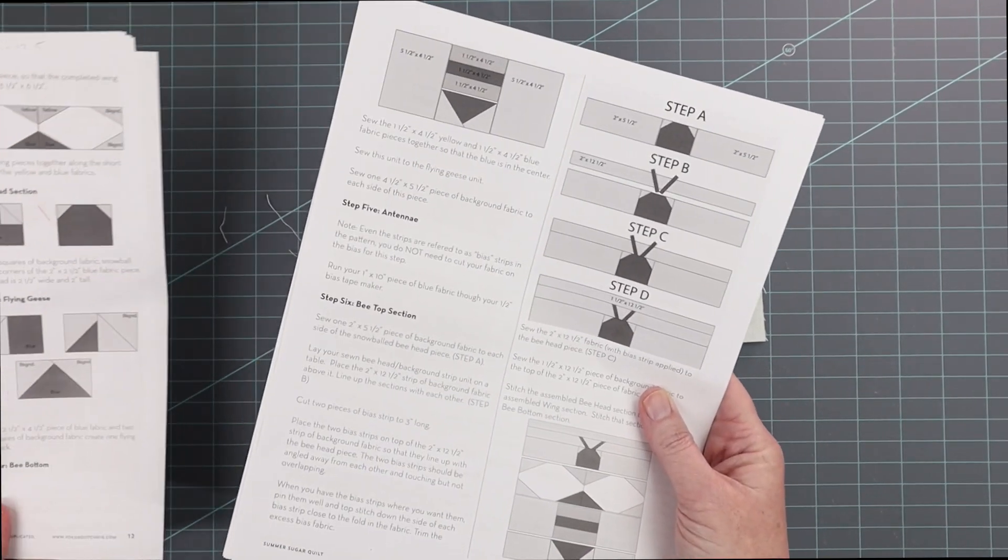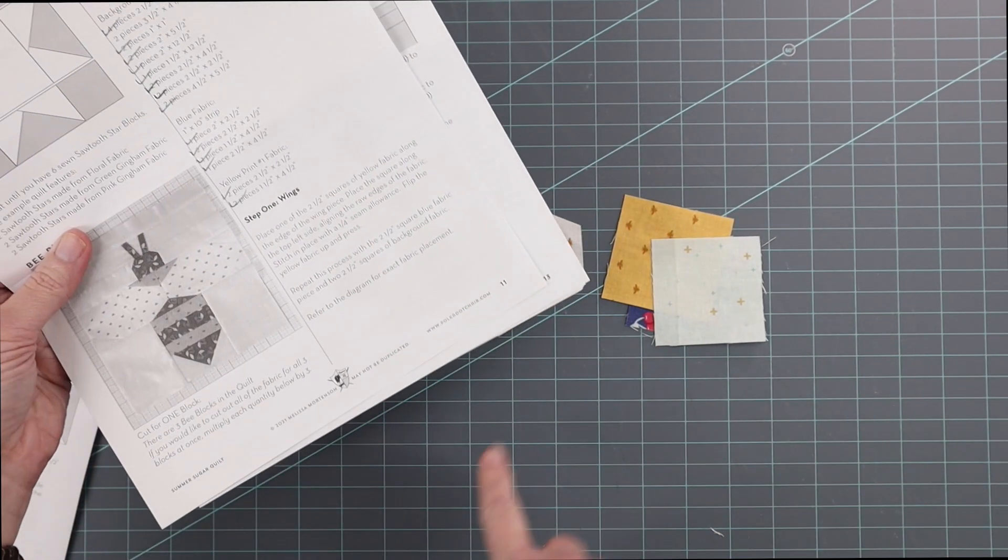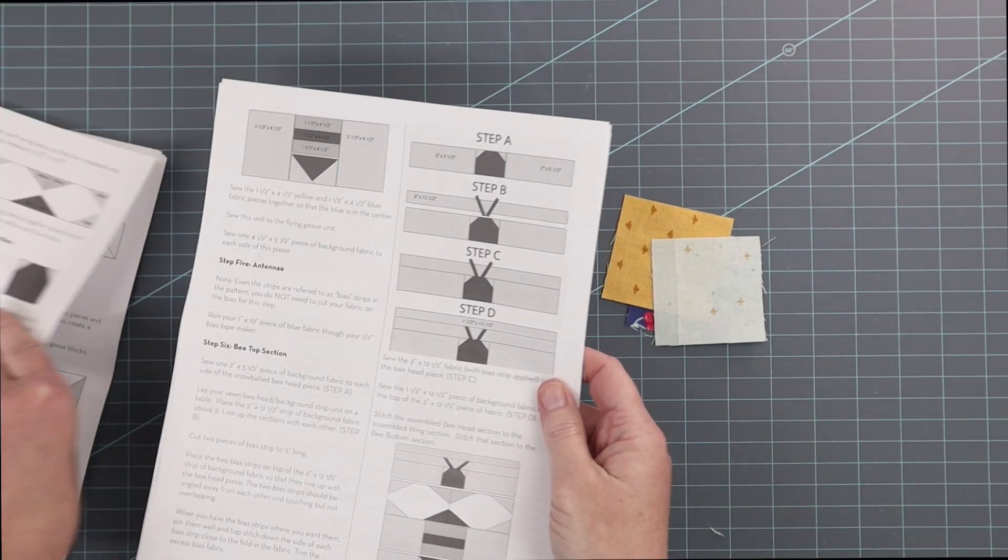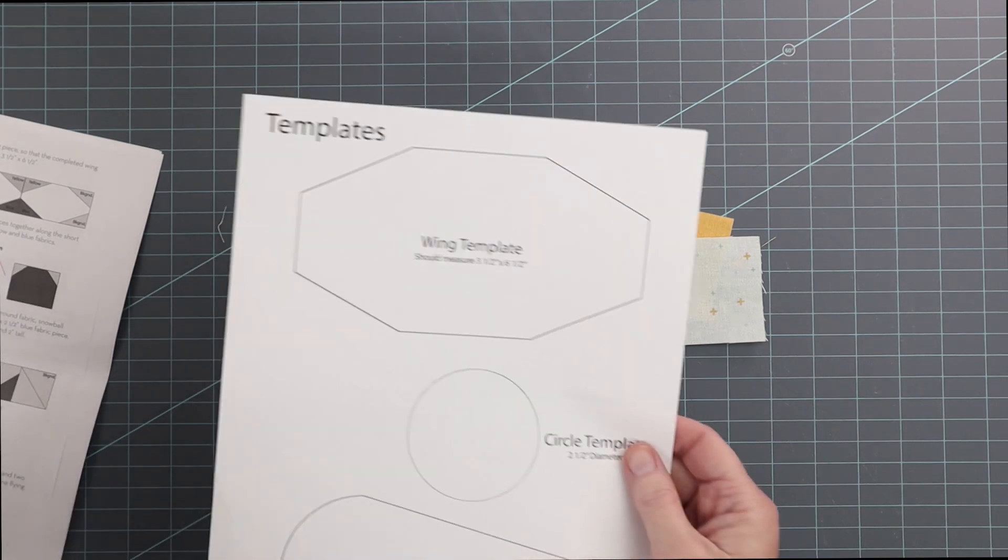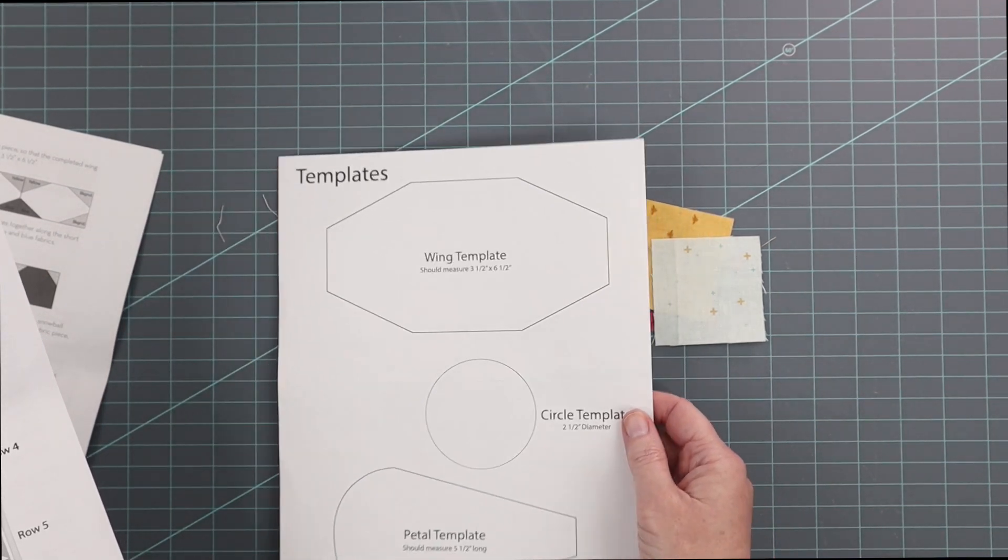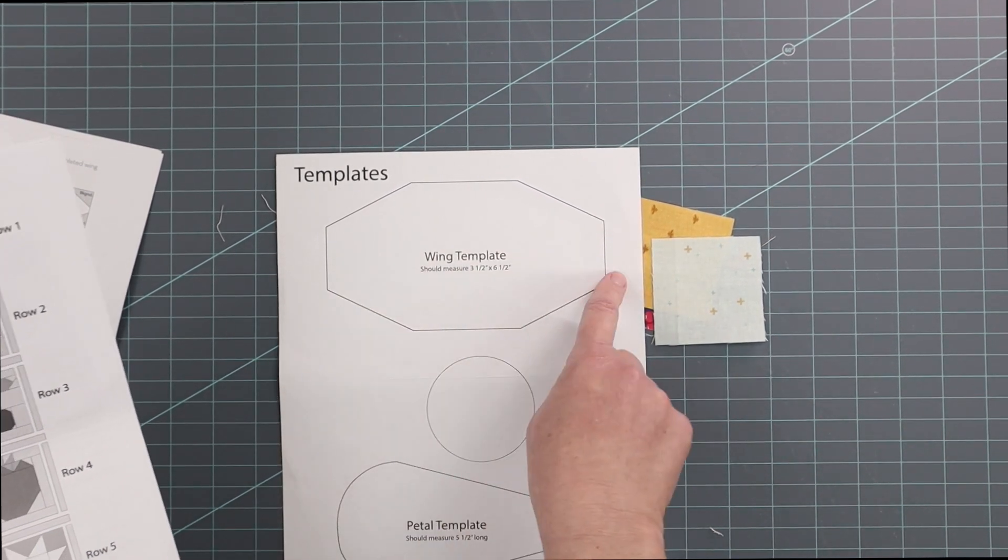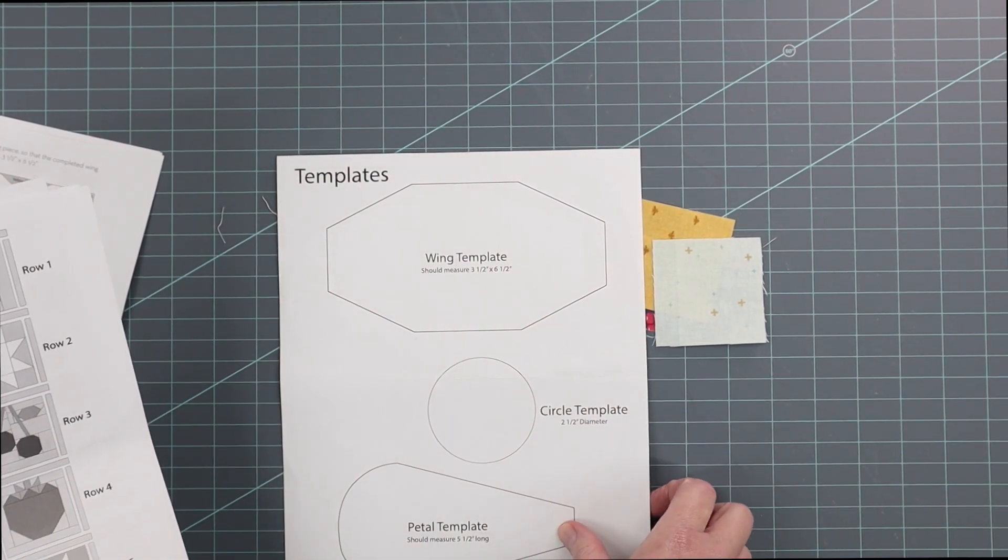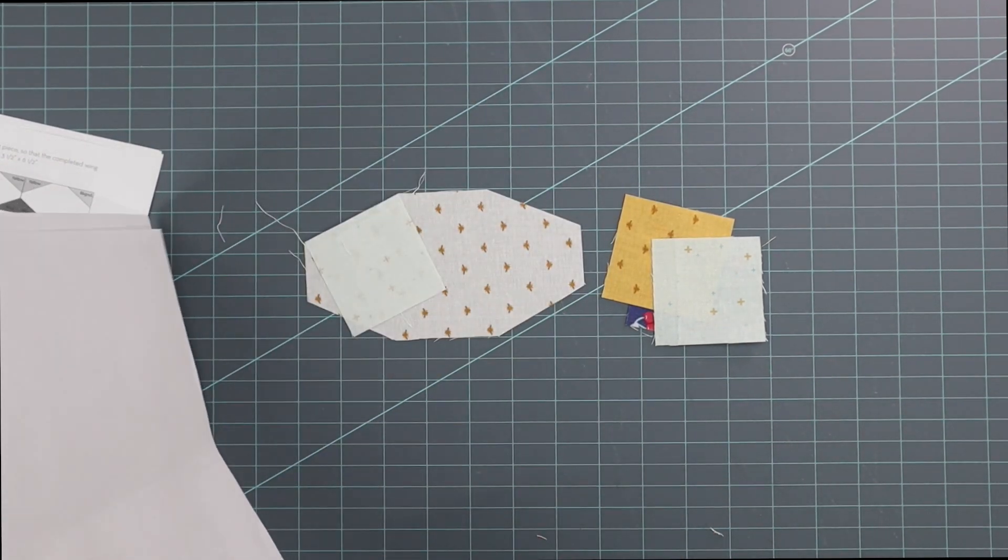On the pattern, the construction instructions begin on page 11, and there is a template piece that you need to grab on the last page of the pattern. It should measure three and a half by six and a half if you want to double check that if you printed this pattern at home, it printed the correct size.